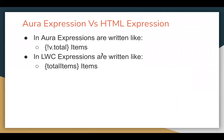Now, how do we use those variables in Aura versus LWC? They are used with the help of expressions. In Aura, expressions are written like this: curly brace, exclamation, then v.total — where total is the attribute. In LWC, if you have created a property named totalItems in the JavaScript file, you just enclose that property name in curly braces. You don't need to write the exclamation and v. prefix.